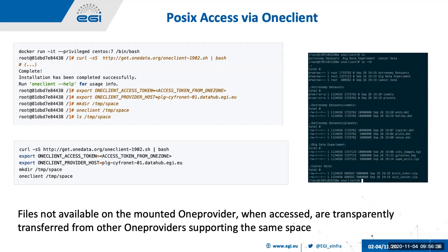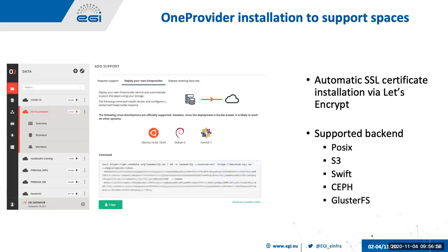There is also the possibility to access storage via POSIX mounting using the OneClient, which can mount the OneProvider locally. This component can be used to mount the OneProvider using a token, either by installing the component or using a Docker container. If a file is not available at the currently mounted OneProvider but exists in another OneProvider supporting the same space, the system will automatically transfer the file from that other provider.